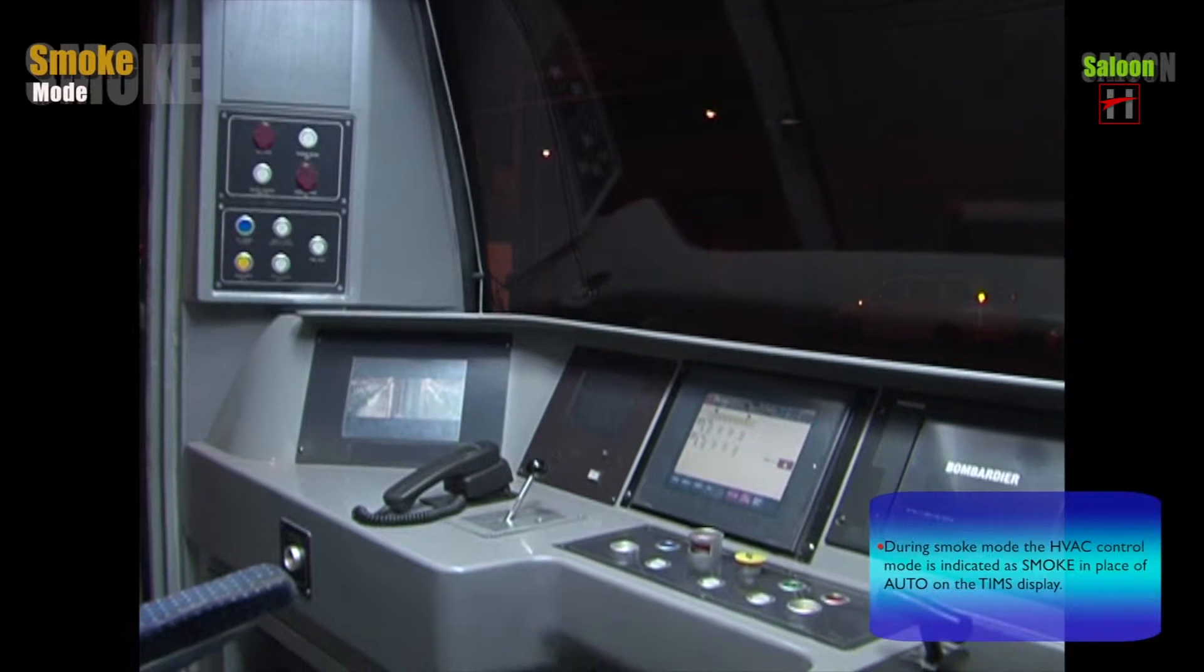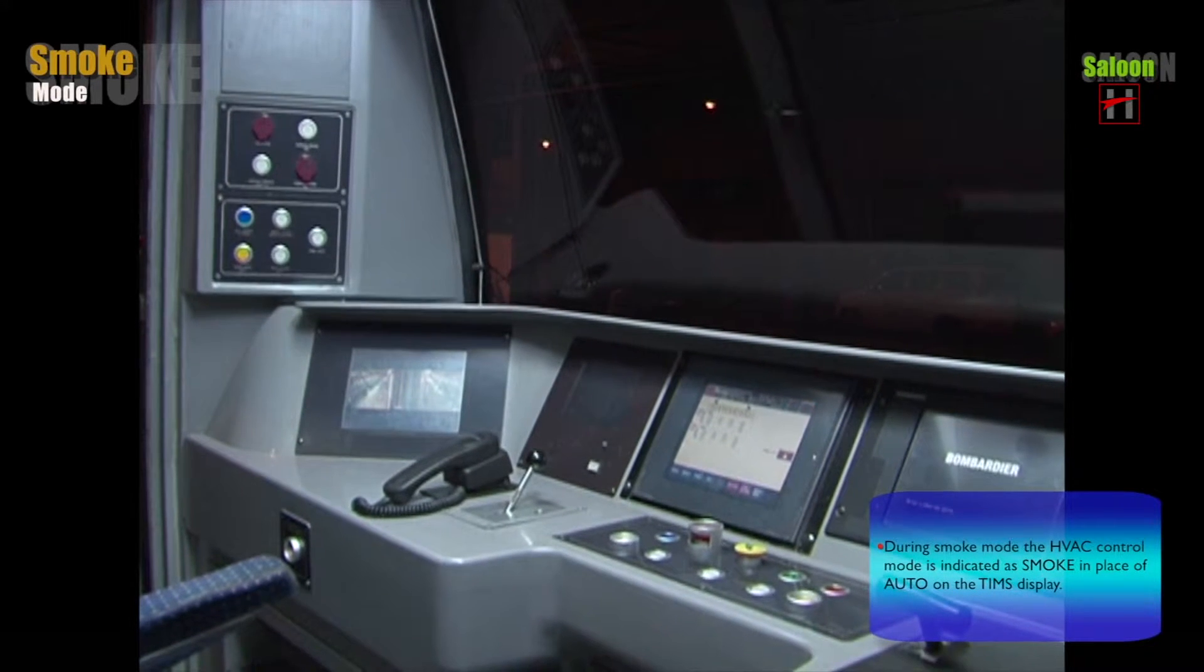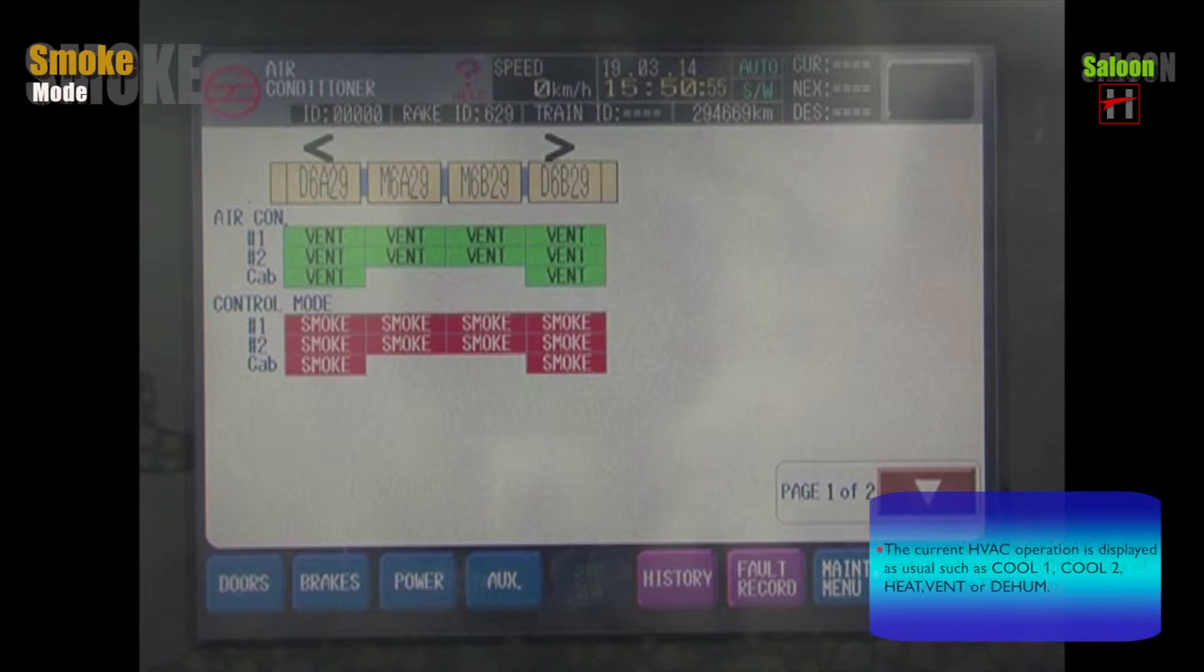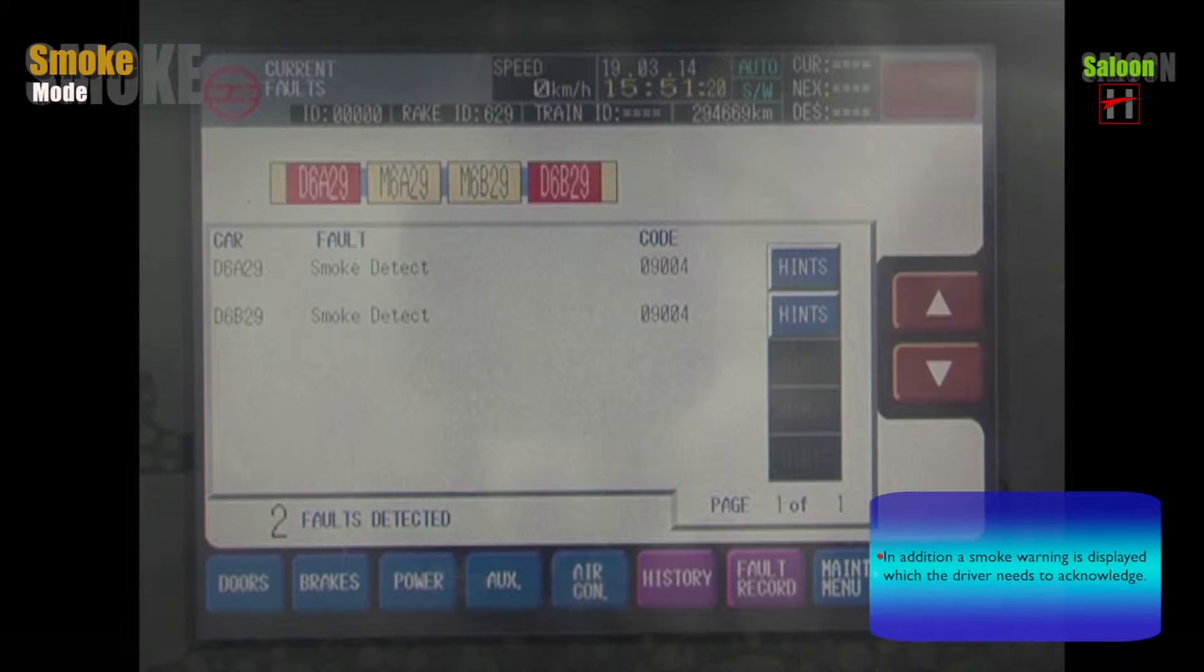During smoke mode, the HVAC control mode is indicated as smoke in place of auto on the TIMPS display. The current HVAC operation is displayed as usual such as cool 1, cool 2, heat, vent or dehumidify. In addition, a smoke warning is displayed which the driver needs to acknowledge.